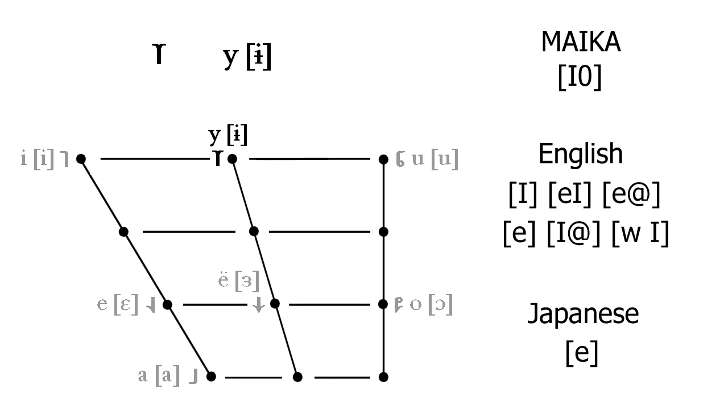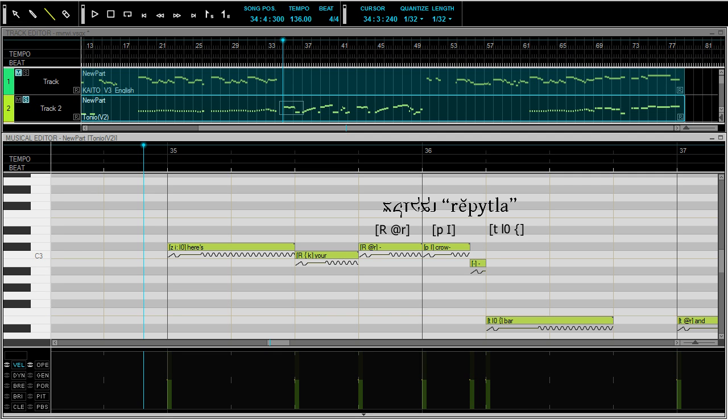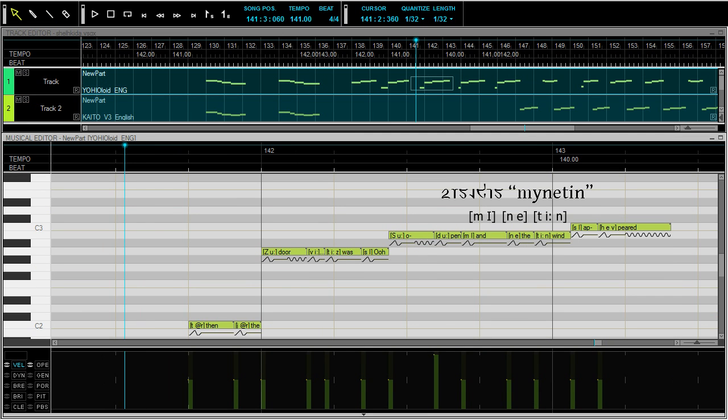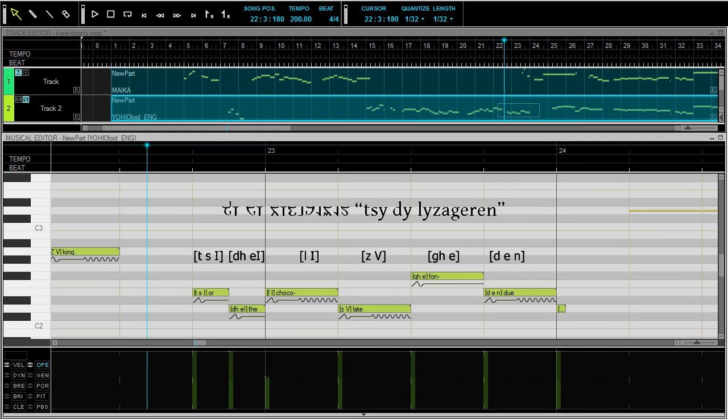For the English Vocaloids, there are three basic options. Capital I can be too far forward, but sometimes it does work. In this case, notice that I've used the dark L in Lizageren. I'll go over consonants in the next video, but sometimes the choice of consonant makes an important difference in the sound. The diphthong A is usually the next best option when capital I doesn't work.